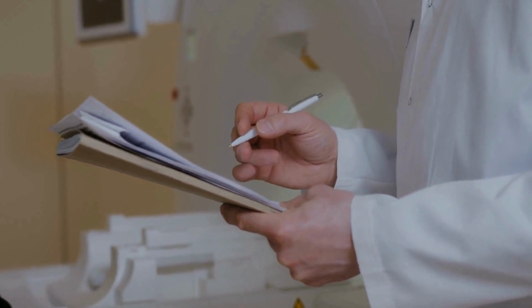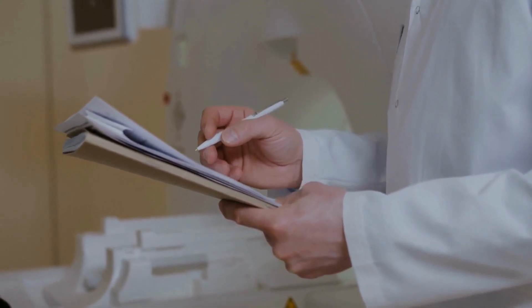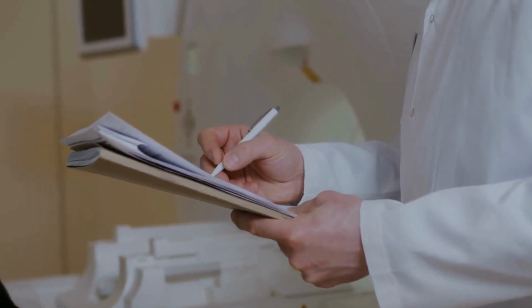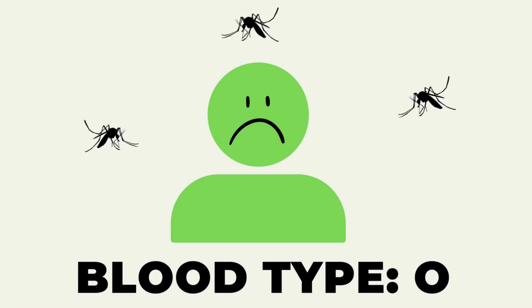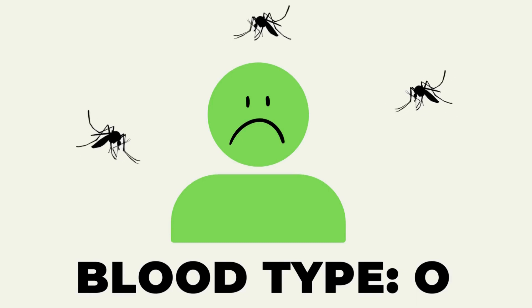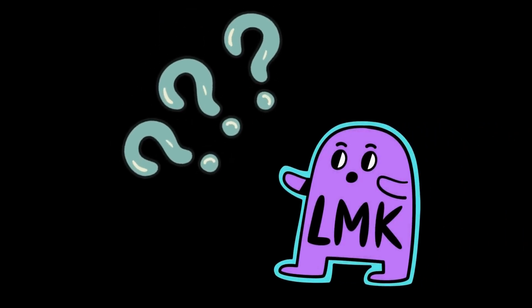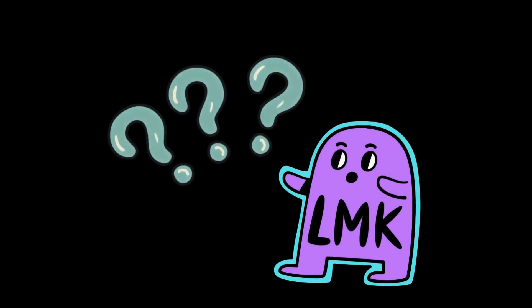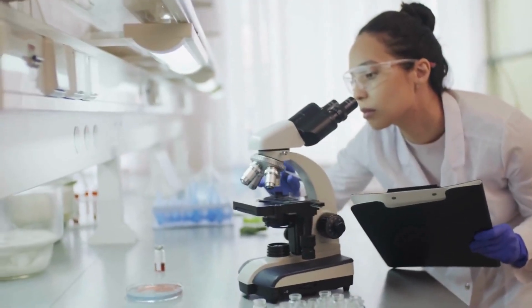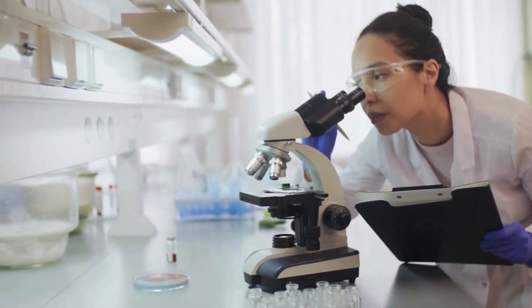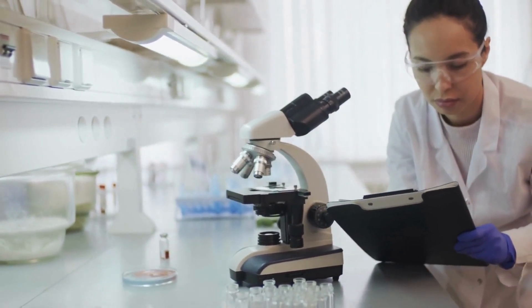Blood Type: Some studies suggest that mosquitoes may have preferences for certain blood types. Research has shown that mosquitoes may be more attracted to individuals with blood type O, while individuals with blood type A may be less attractive to mosquitoes. Let us know in the comments what blood type you are. However, more research is needed to fully understand the role of blood type in mosquito preferences.